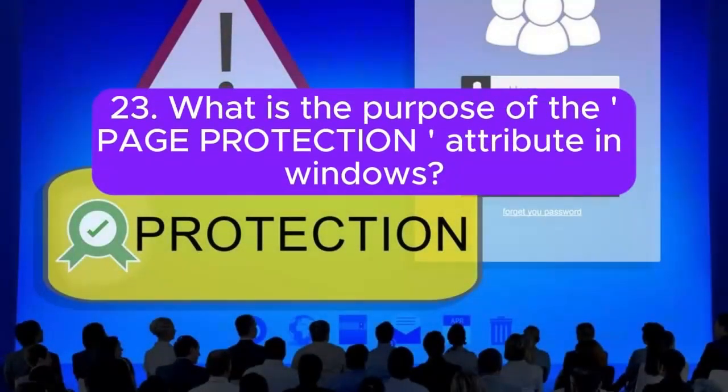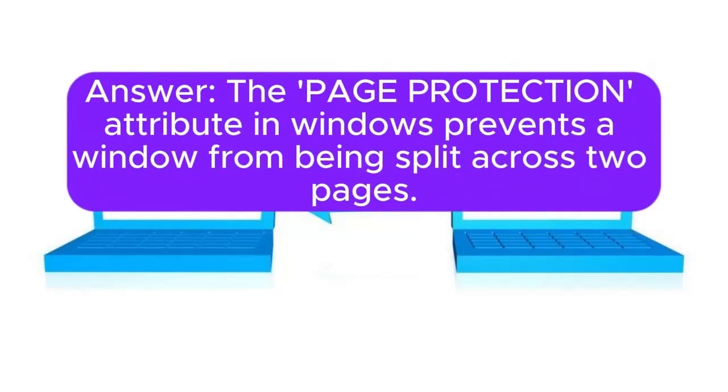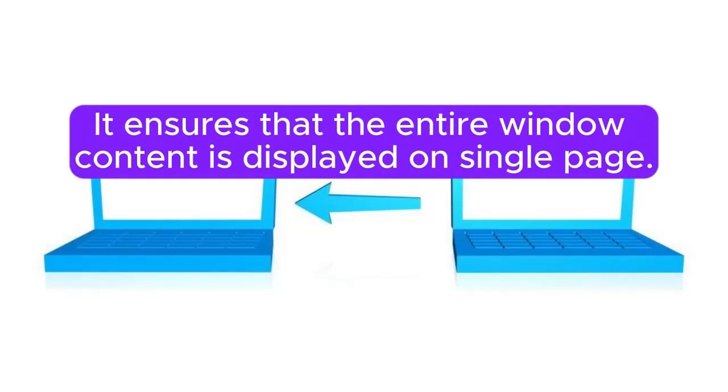23. What is the purpose of the page protection attribute in Windows? Answer: The page protection attribute in Windows prevents a window from being split across two pages. It ensures that the entire window content is displayed on a single page.